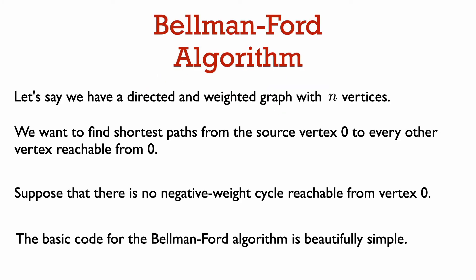Let's say we have a directed and weighted graph with n vertices, and we want to solve the single source shortest path problem where the source vertex is vertex zero. We also assume that there is no negative weight cycle reachable from vertex zero. Later on, we will see how we can detect negative weight cycles.